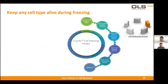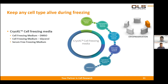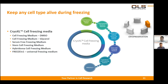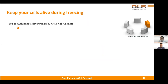We also offer different kinds of freezing media that are ready to use, for example our CryoXL and cell freezing media, optimized for freezing cells of different types. We also have a universal freezing medium called Freeze in One that can be used for several cell types. Apart from the optimized freezing medium, which further factors influence cell survival during the freezing process? It is very important that the cells are in the logarithmic — also called exponential — growth phase. You can determine this with our KC cell counter.